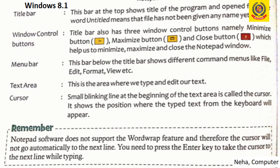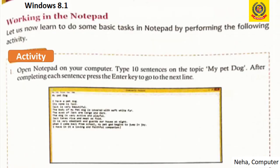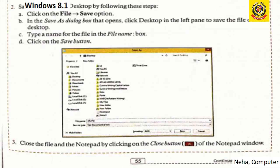So those were the parts of Notepad. Now we will do an activity in Notepad where we have to type 10 sentences about my pet dog. To go to the next line, press the Enter key. After completing the 10 lines, save the file by clicking on File and then the Save option. A dialog box will open — name the file and click the Save button. After our work is done, click the Close button to close the Notepad window.